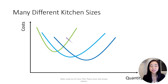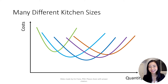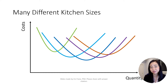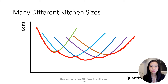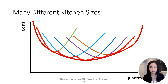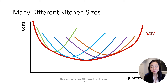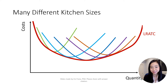In reality, our kitchen size is not limited to small, medium, and large. In fact, there are many different kitchen sizes that will result in different average total cost curves. Finding the lowest point of all possible average total cost curves will give us the long-run average total cost curve. Notice how the long-run average total cost curve envelopes all short-run average total cost curves.